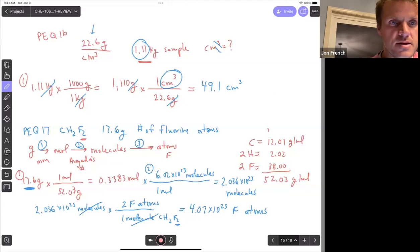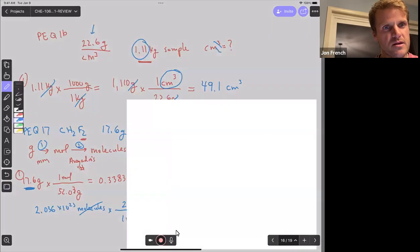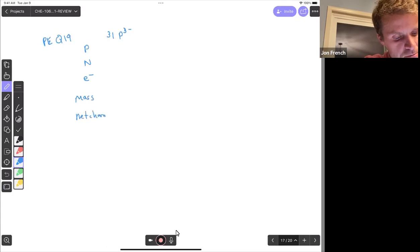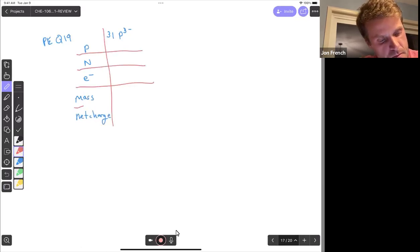That was 16 and 17. The much requested question 19 is up next. I won't do the entire box of question 19, but we can do one of those rows. So for question 19, so practice exam question 19, the first one is three minus, phosphorus three minus. So it wants to know protons, neutrons, electrons, the mass, and net charge.